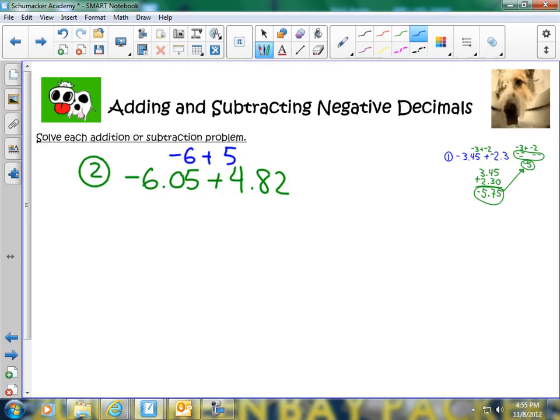If I have negative 6 plus 5, that's like having 1, 2, 3, 4, 5, 6, 6 negatives and 1, 2, 3, 4, 5 positives. And we know that we can, for every positive, we can cancel out with a negative, right? So all of these cancel out and I'm left with one negative, so my answer here will be negative 1.